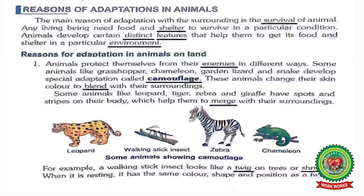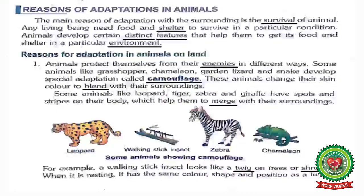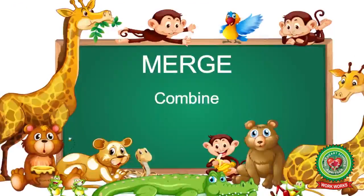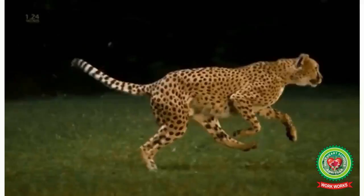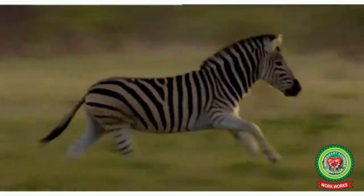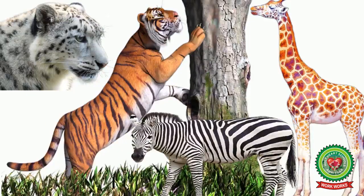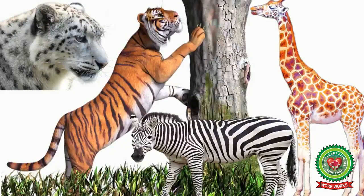Some animals like leopard, tiger, zebra, and giraffe have spots and stripes on their body which help them to merge with their surroundings. Underline 'merge' and write down its meaning: combine. These animals have stripes or spots on their body that mix with the surrounding, and this feature helps them to protect themselves from their enemies.